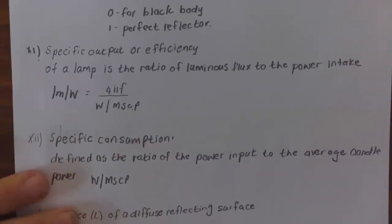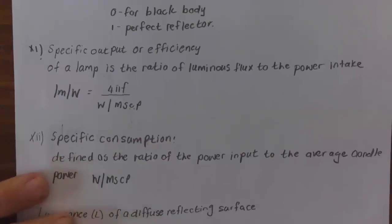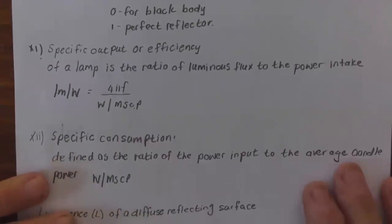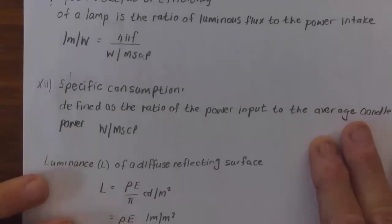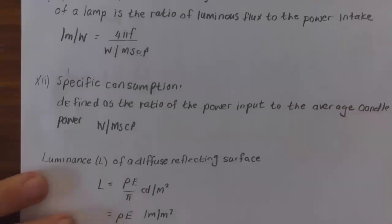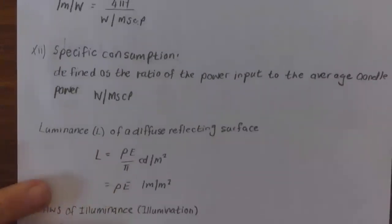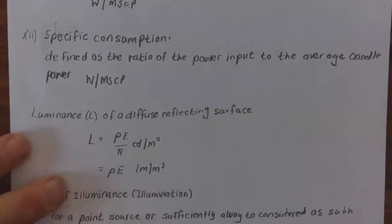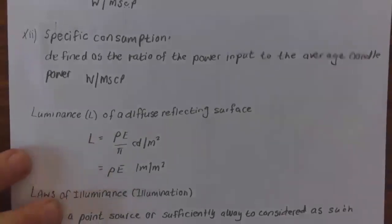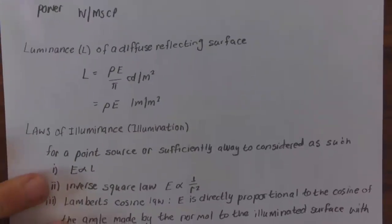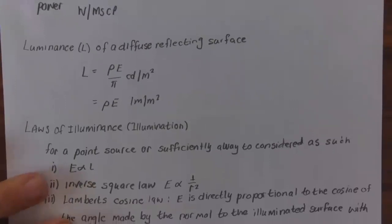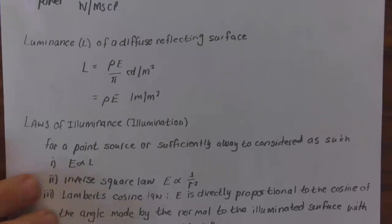Specific output or the efficiency of a lamp is the ratio of the luminous flux to the power intake, so lumens per watt equals 4π·F divided by Ω, or watts per mean spherical candle power. Specific consumption is defined as the ratio of the power input to the average power, in watts per MSCP. The luminance L of a diffuse reflecting surface is L = ρ·E/π candela per square meter, or ρ·E lumens per meter squared.